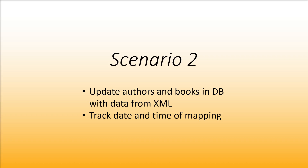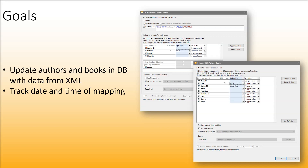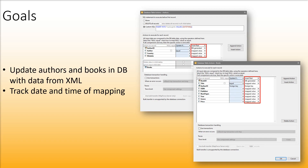We also want to track the date and time of the mapping. To achieve these goals, we will update authors and books that exist both in the source file and the database. The update condition will prevent us from getting duplicate records. We also want to insert author and book records that exist only in the source file. Besides, we will add an SQL statement to get information about the date and time of the mapping.